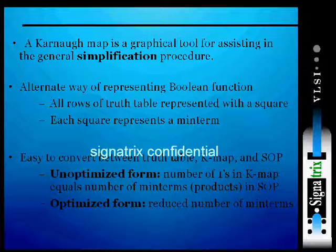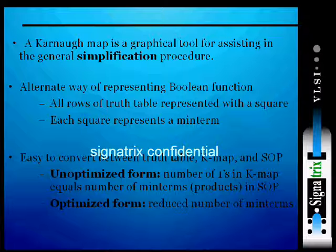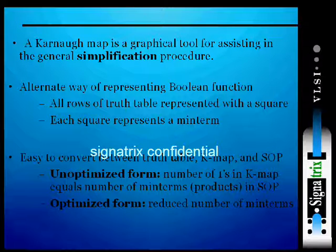It's available in two types of these forms. So the number of ones in the K-map — what exactly is the unoptimized form?